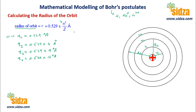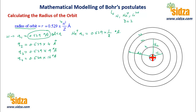Now if you want to calculate it for the helium ion — its atomic number is 2 — the radius of the first orbit of the helium ion will be equal to 0.529 times 1 squared divided by atomic number 2, which gives 0.529/2 angstroms. Comparing the first orbit of helium ion to the first orbit of hydrogen, the relation is 1 by 2 — helium ion has half the radius of the first orbit of hydrogen, which is called the Bohr radius.